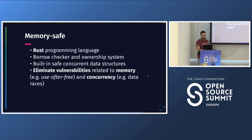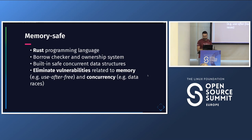Servo is memory-safe because it uses Rust. Rust has features like the borrow checker, ownership system, and built-in safe concurrent data structures that help eliminate vulnerabilities related to memory — like use-after-free — and concurrency issues like data races. Thanks to the language, you create safer applications, and Servo is one of those using Rust.